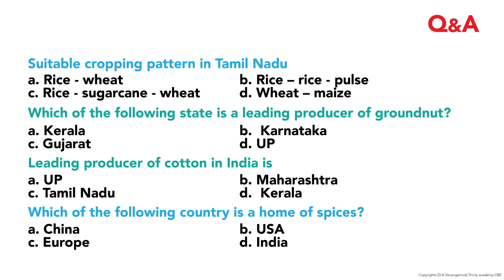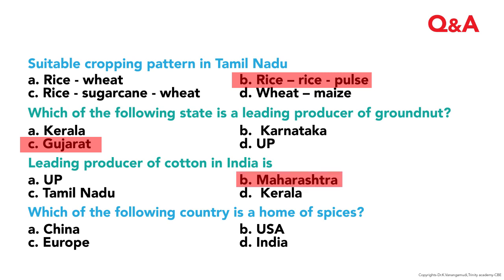Question and answer: The suitable cropping pattern in Tamil Nadu — the correct answer is rice–rice and pulses. Which of the following state is a leading producer of groundnut? The correct answer is Gujarat. The leading producer of cotton in India is Maharashtra. Which of the following country is the home of spices? The answer is India.